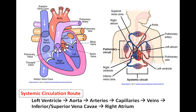Blood will make its way into small arterioles and through a capillary bed, which is the site of exchange. Oxygen will diffuse out of the blood into the cells and carbon dioxide will diffuse out of the cells into the capillary. The flow of the now deoxygenated blood continues into venules which merge into larger veins, which in turn merge into the superior vena cava from above and the inferior vena cava from below, draining into the right atrium and concluding the systemic circulatory route.